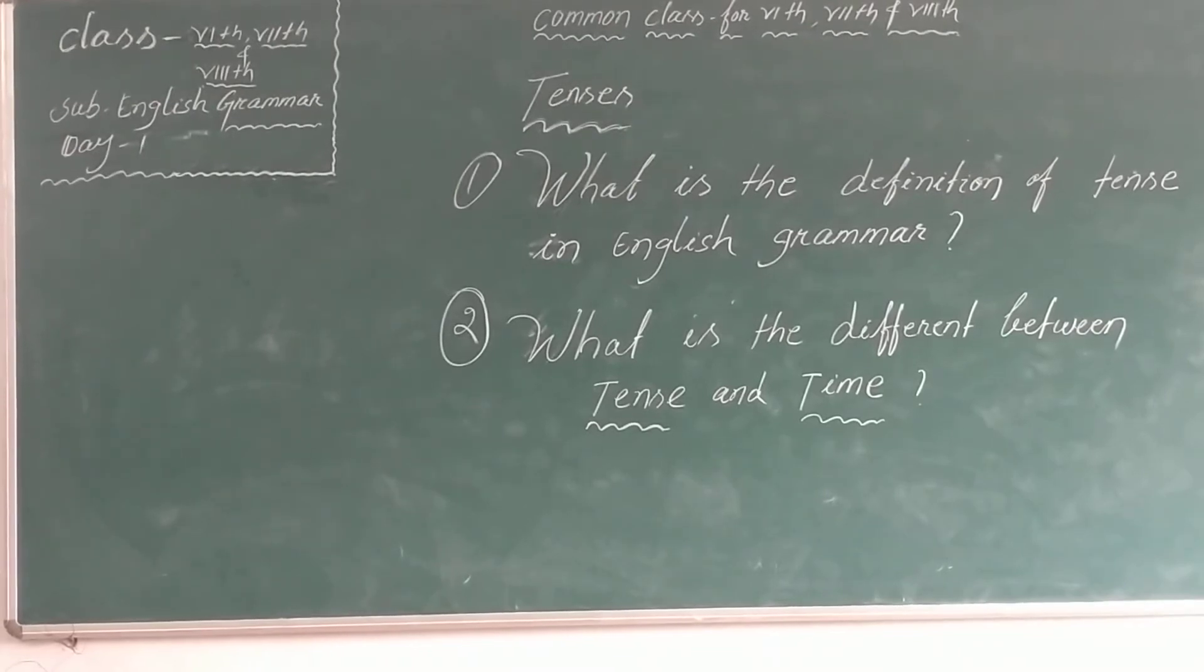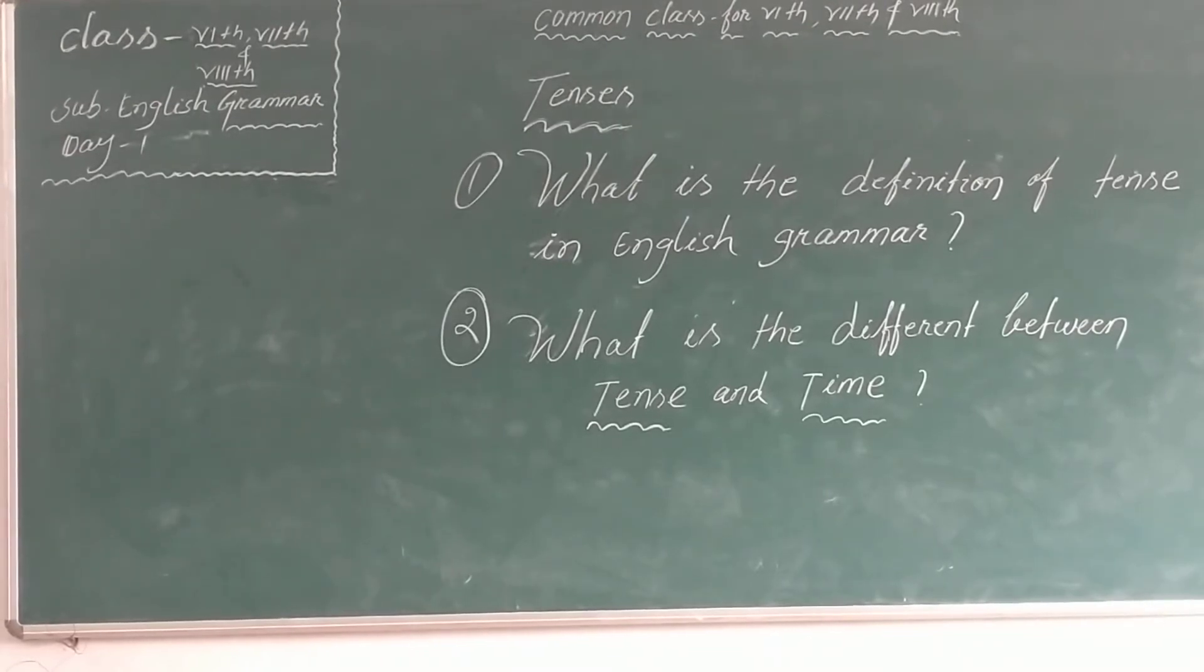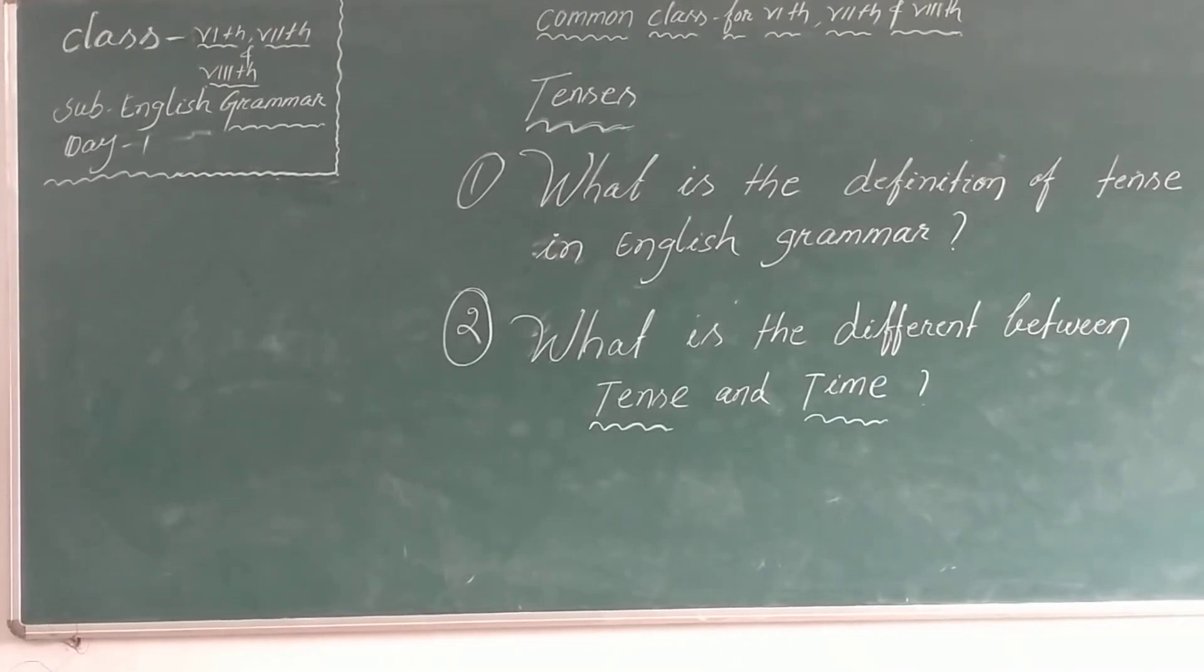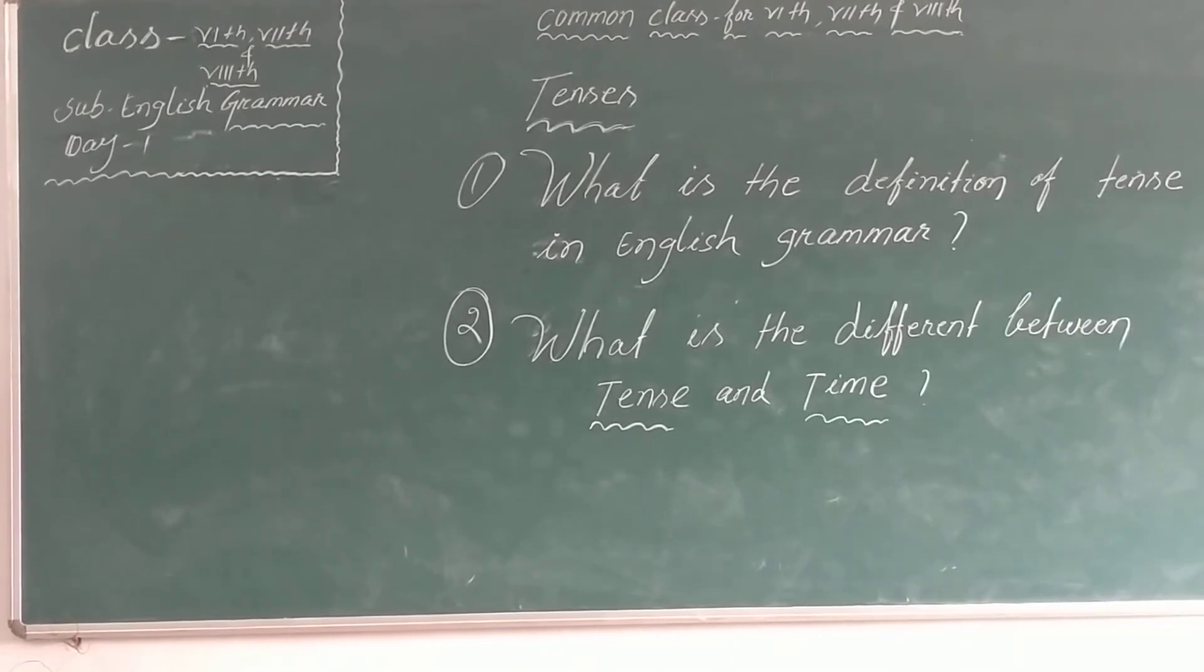Difference between time and tense. Time is used as a noun but tense is also used as a verb. Tense is used as an adjective, verb, and noun. The use of tense as a noun is the most important. Tense as a noun represents the field in grammar called tense.